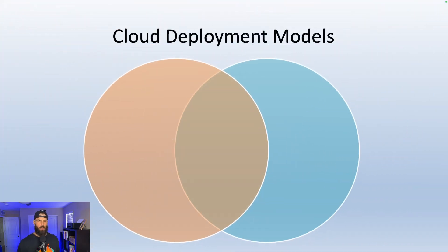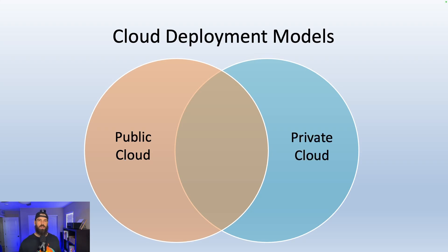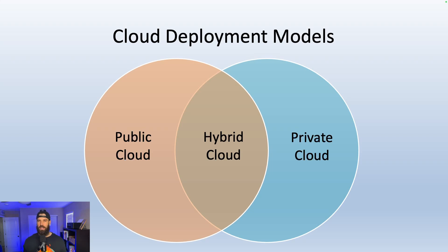Now let's talk about cloud deployment models. There are three main ways the cloud can be deployed. Public cloud is the most common — this is what AWS, Azure, and Google Cloud Platform offer, where resources are shared among customers but isolated securely. Private cloud is when services are deployed to an on-premises data center for the dedicated use of a single organization, common in sectors with sensitive workloads like finance or government. Hybrid cloud is a mix of both — maybe your critical data stays in a private cloud, but your public website is hosted on AWS.